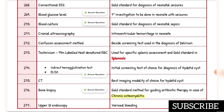Bedside screening test used in diagnosis of delirium is confusion assessment method. Used for specific screening, assessment, and gold standard in splenosis is technetium-99m labeled heat-denatured RBC. Initial screening test of choice for diagnosis of hydatid cyst is indirect hemagglutination test or ELISA. Best imaging modality for hydatid cyst is CT.